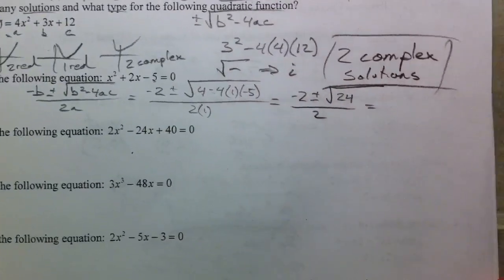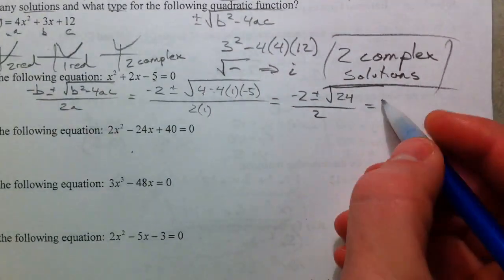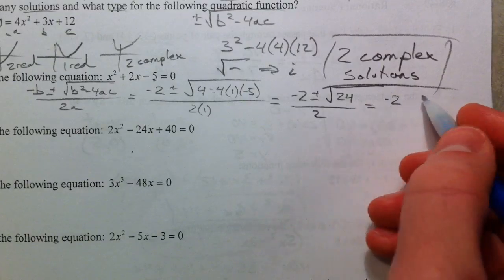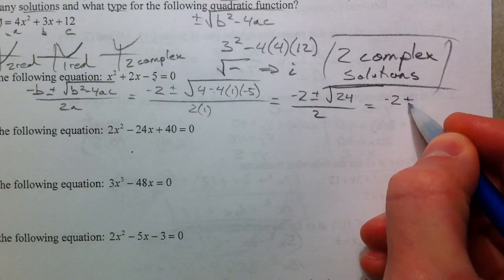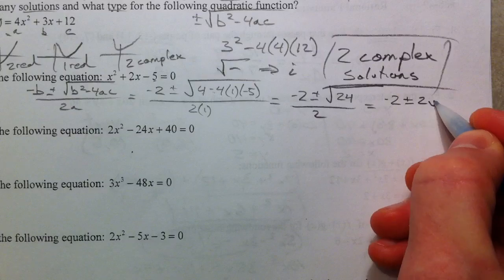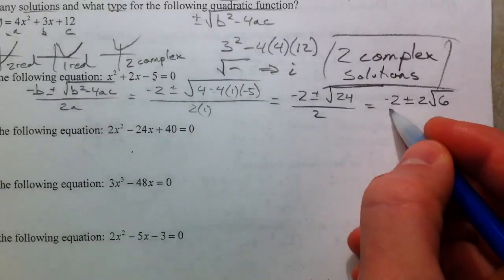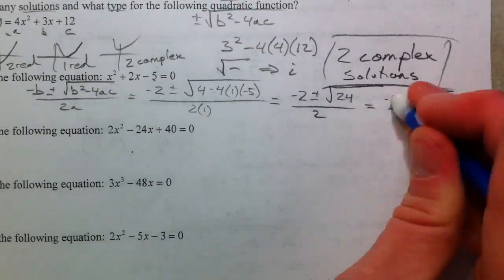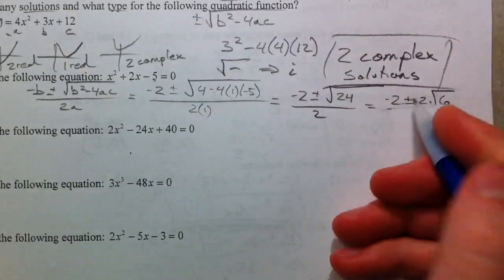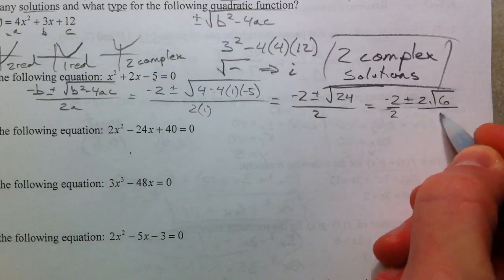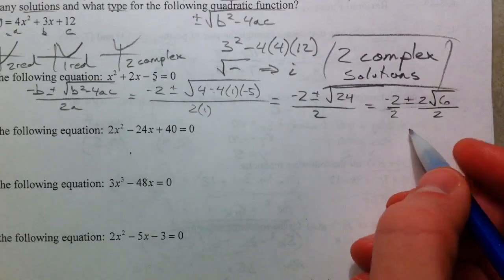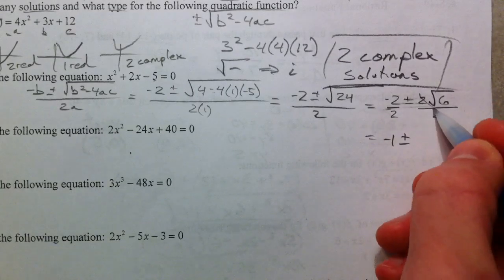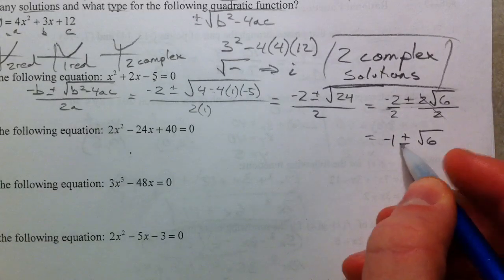We can reduce the radical: 24 is 4 times 6. The square root of 4 is 2, and 6 stays inside the radical. If we split this up now to simplify, we go negative 2 over 2 plus or minus 2 root 6 over 2, and so you get a final answer of negative 1 plus or minus root 6.